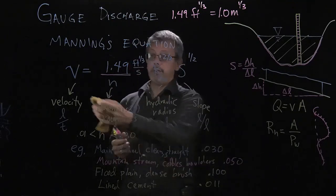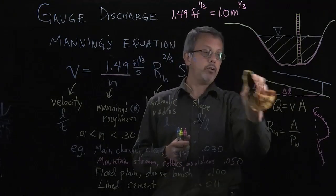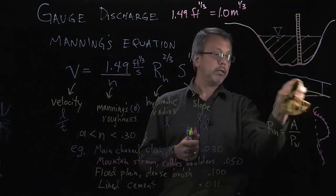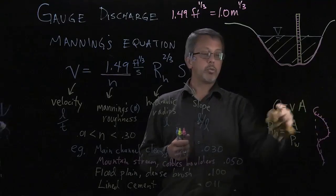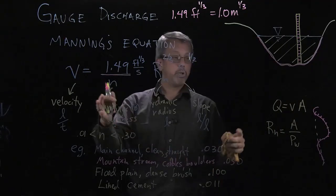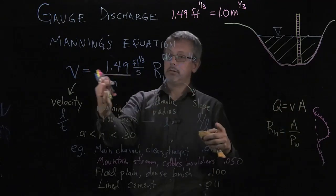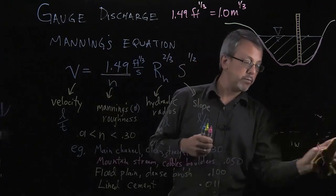So this is our relationship for our velocity here, our velocity relative to these different values. Notice, we also have our continuity equation, Q equals VA over here.